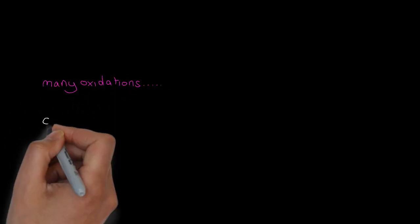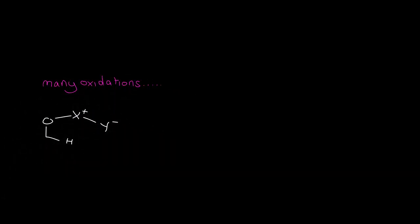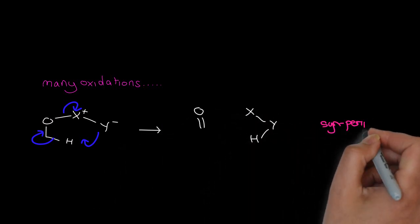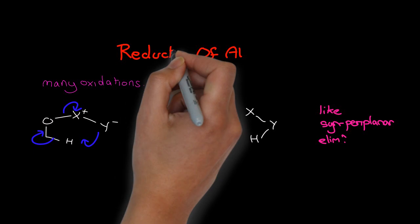Many oxidations of alcohols feature five-membered ring transition states. It might be expected, then, that reductions of carbonyls would proceed in the same way.